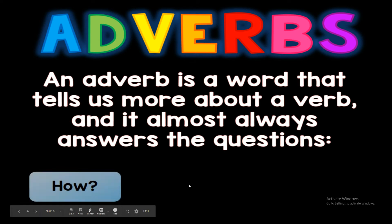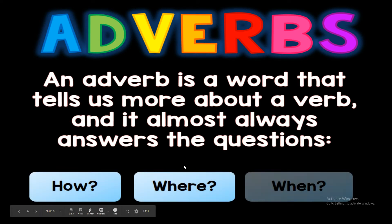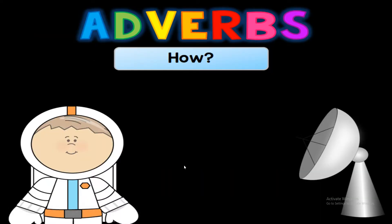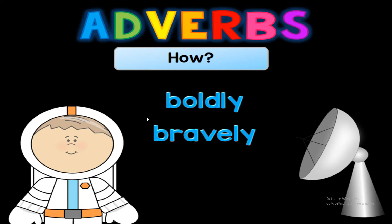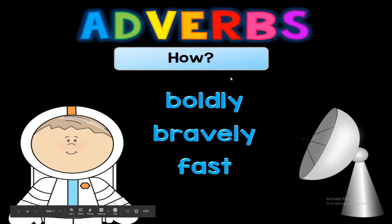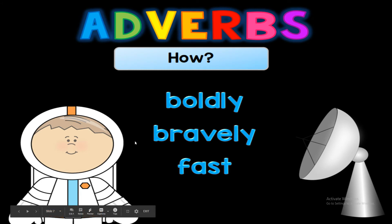Let's look at some 'how' adverbs. Boldly — he boldly came in the door. Bravely — the dog bravely chased the bear. Fast — the boy ran fast. These words all answer 'how,' like how did you do it? I did it fast, I did it boldly, I did it easily.